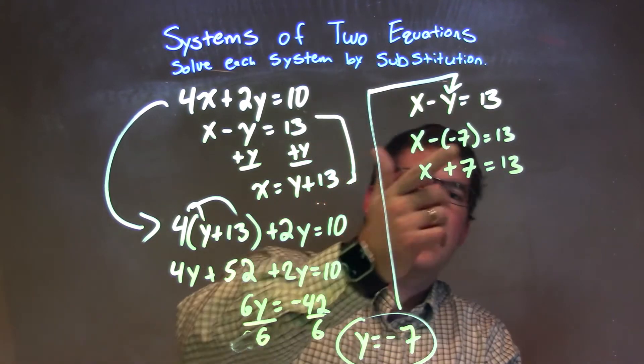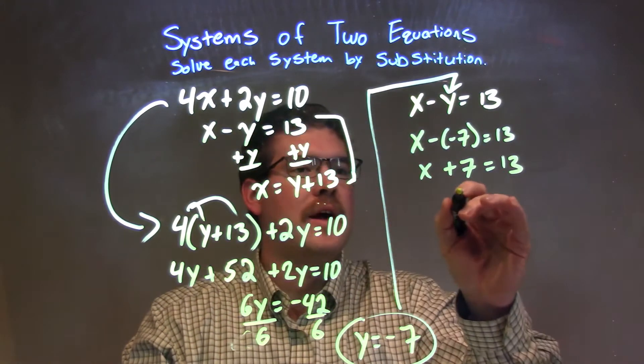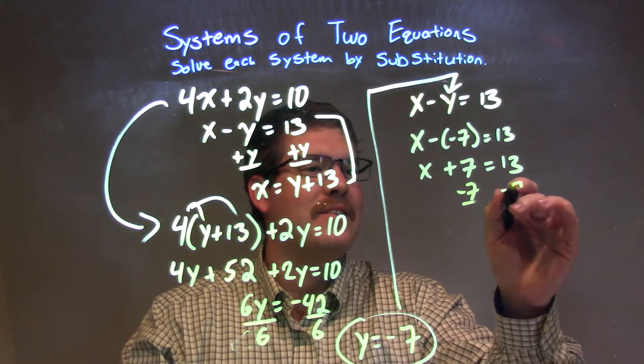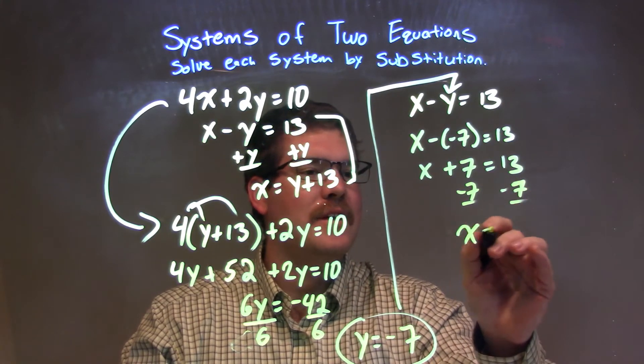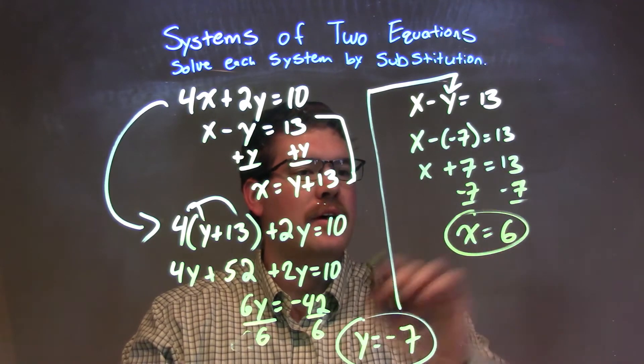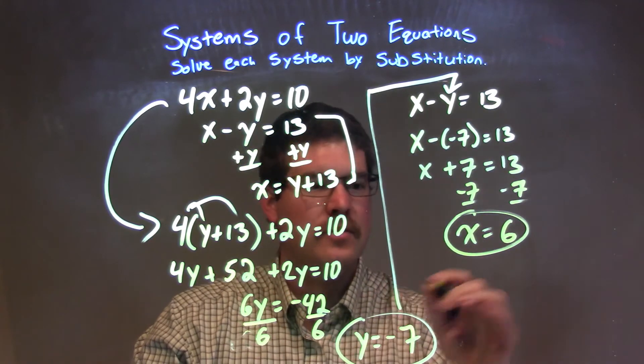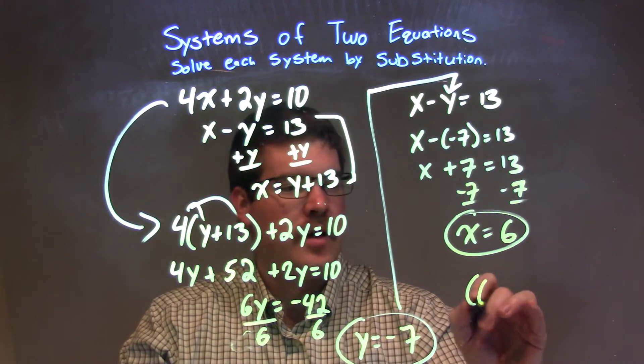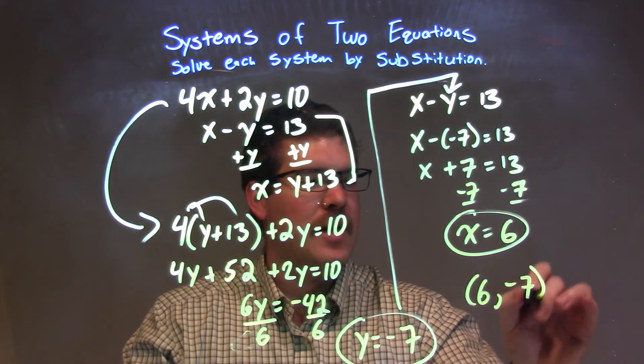So now I'm going to subtract 7 from both sides, leaving me x equals 13 minus 7, which is 6. So our x value is 6, our y value is negative 7. Together, they come to the coordinate point, which is our final answer: 6 comma negative 7.